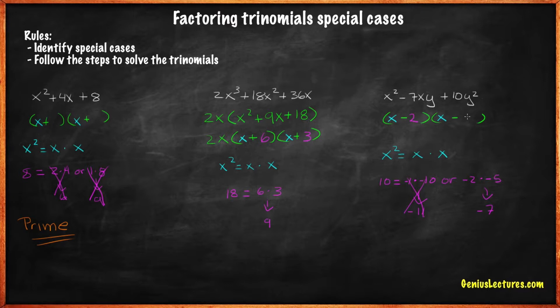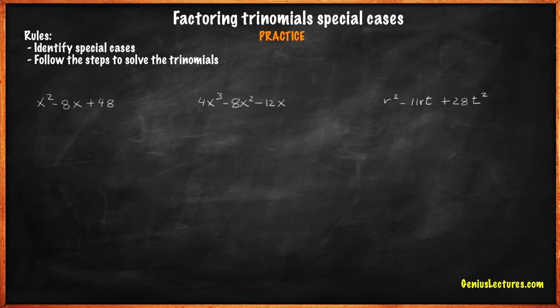Notice how we write the answer when we are factoring with two variables: x minus 2y times x minus 5y.